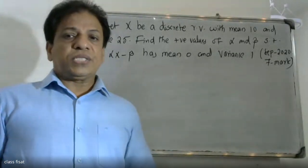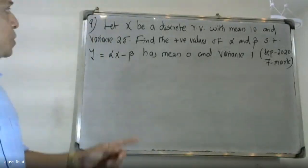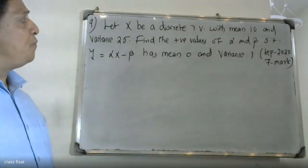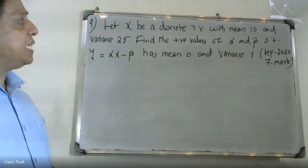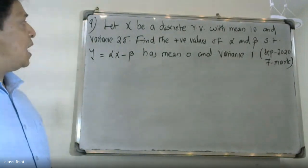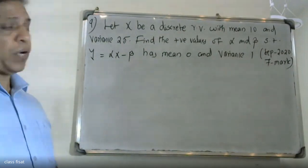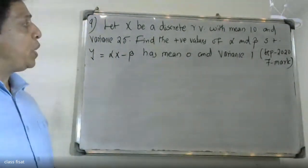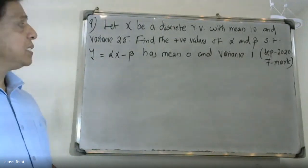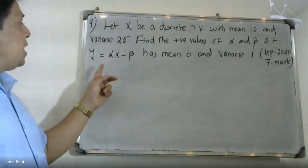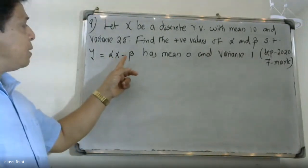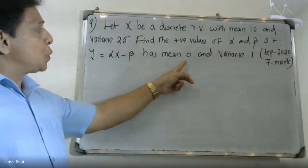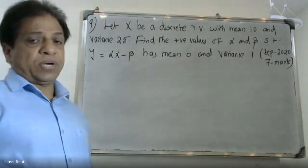Good morning, students. Let X be a discrete random variable with mean 10 and variance 25. Find the positive values of alpha and beta such that Y equals alpha X minus beta has mean 0 and variance 1.